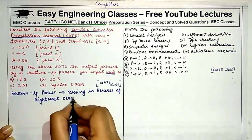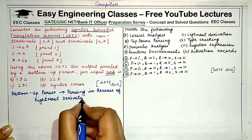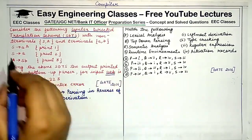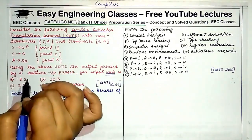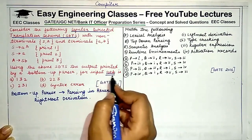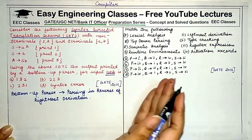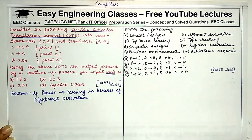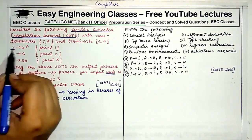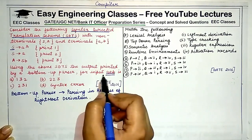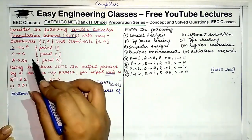In rightmost derivation, if we start deriving a string like AAB from the given productions, a bottom-up parser starts from the last step and derives all steps one by one to reach the starting symbol. A top-down parser starts from the starting symbol to reach the final string, but a bottom-up parser starts from the string to reach the start symbol.